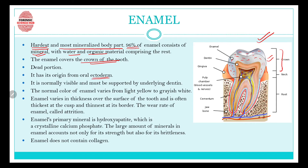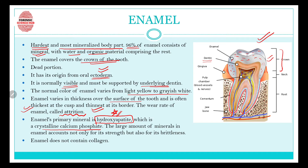Enamel has its origin from the ectoderm germ layer. It is normally visible and is supported by the underlying dentine. The normal color of enamel varies from light yellow to grayish white. Its thickness varies over the surface of the tooth — it is often thickest at the cusp area and thinnest at the border. The wear rate of enamel is known as attrition. Enamel's primary mineral is hydroxyapatite, which is basically crystalline calcium phosphate. The large amount of minerals accounts for both its strength and its brittleness.